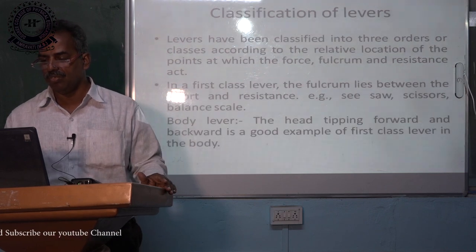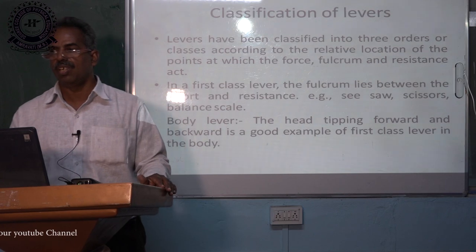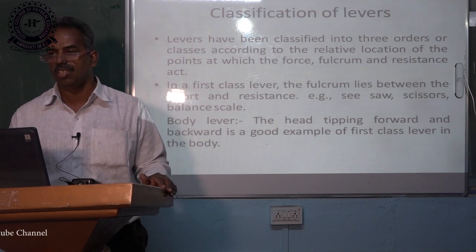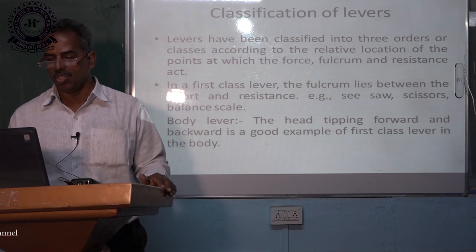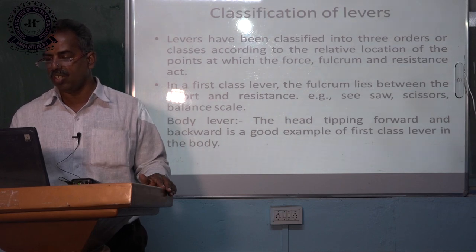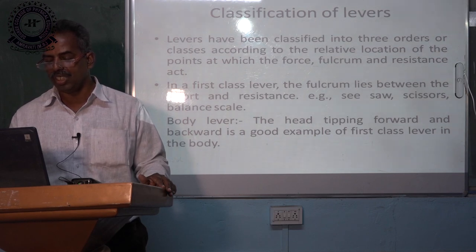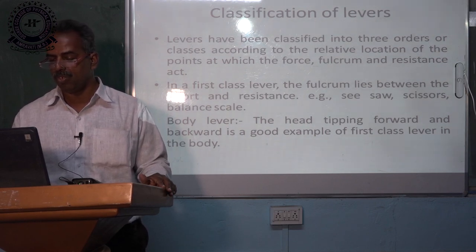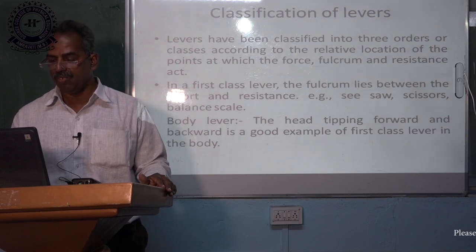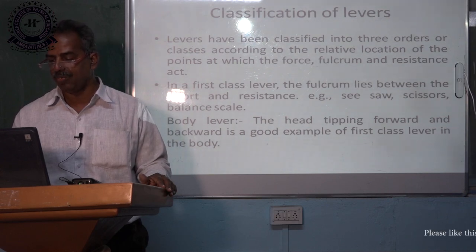Classification of levers: levers have been classified into three orders or classes according to the relative location of the points at which the force, fulcrum, and resistance act. In a first class lever, the fulcrum lies between the effort and resistance. Examples include the see-saw, scissors, and balance scale. In the body, the head tipping forward and backward is a good example of a first class lever.